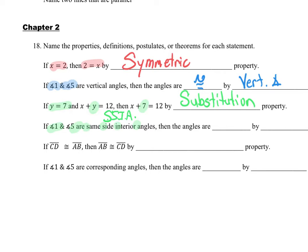With a transversal. Remember chapter 2 — parallel lines with a transversal. When I talk about same-side interior angles, that's two angles on the same side of the transversal that are inside, in between the lines. Same-side interior angles are supplementary — they add up to 180 degrees. Complementary is when they add up to 90 degrees. That theorem is the same-side interior angle theorem.